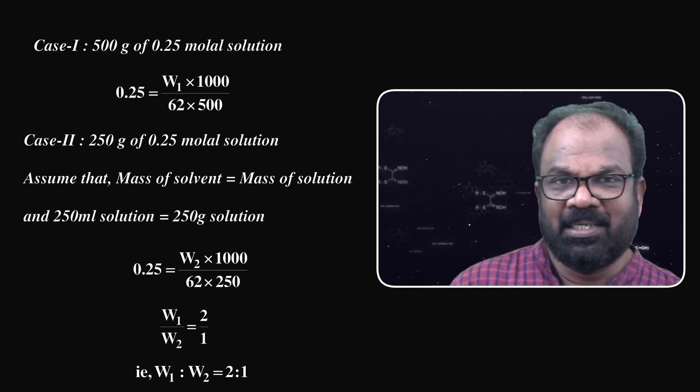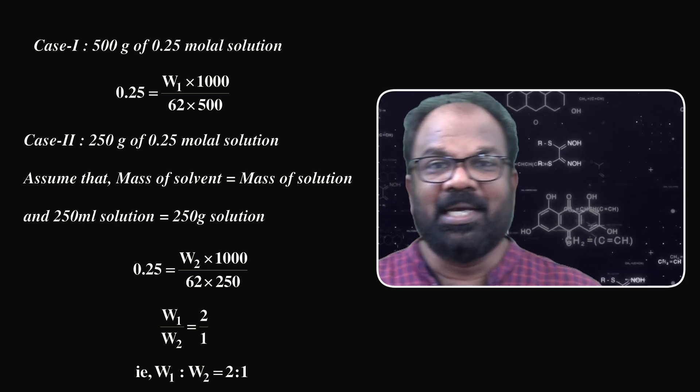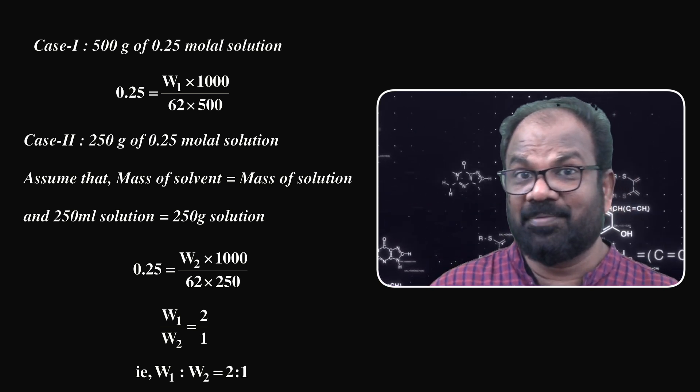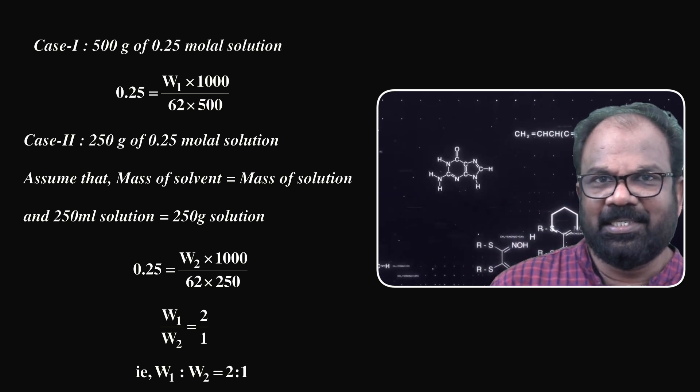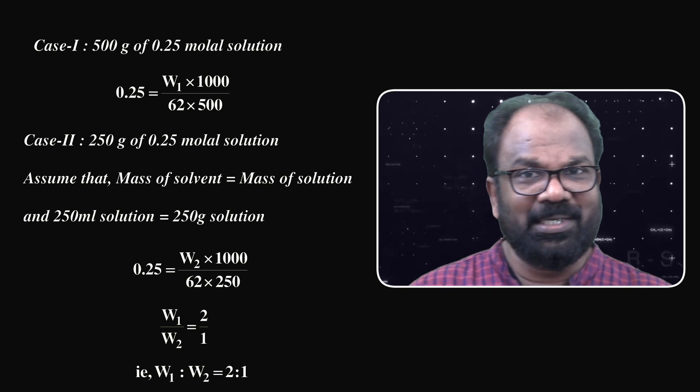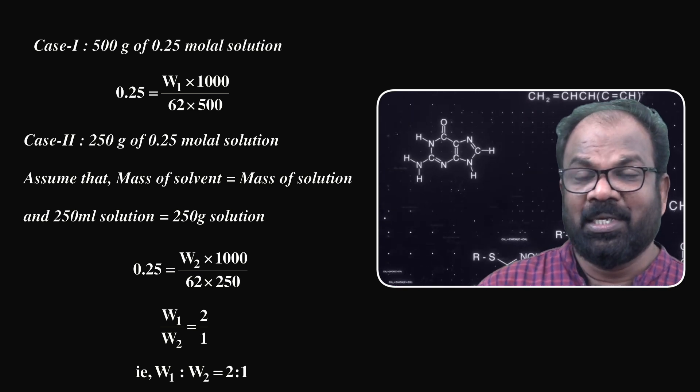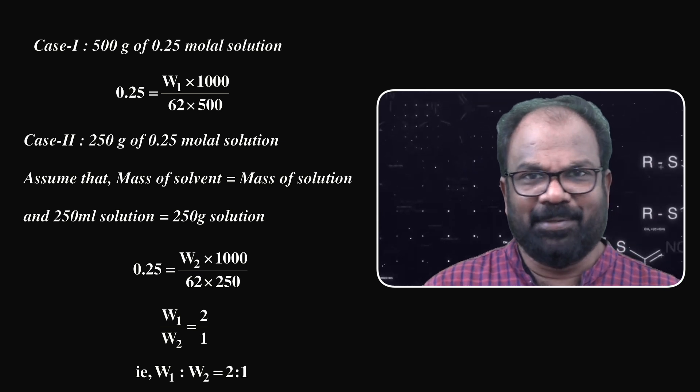Here we need to assume that 250 ml solution equals 250 gram solution and mass of solution equals mass of solvent. In the first case, molality of the solution 0.25 equals weight of solute W1 times 1000 divided by molecular mass of solute which is 62 times weight of solvent 500.